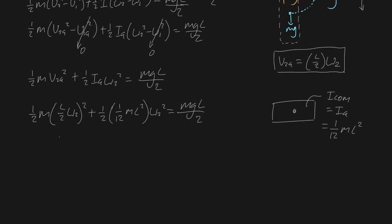Let's just rush through the algebra, because I'm sure we're all pretty good at this. So this is going to be ω2² times ½m times (L/2)², which is L²/4, plus if you simplify this out, it's going to be mL²/24. So that's these two terms taken care of. And the right hand side remains how it was, mgL/2.